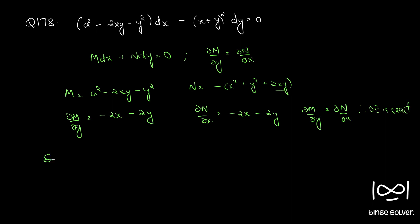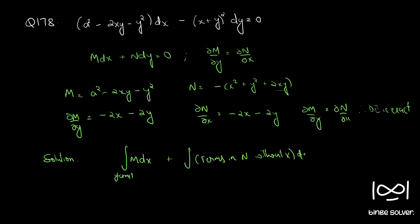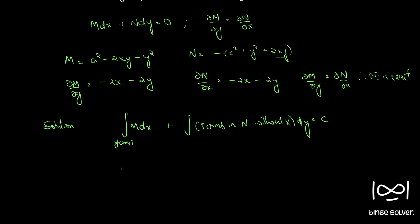The solution for such equations is given by: integral of M dx (where y is considered a constant) plus integral of terms in N without x, dy = c. So here it is integral of (x² - 2xy - y²) dx plus integral of (-y²) dy = c.